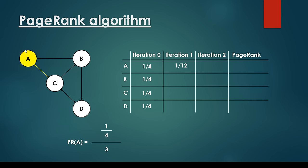What about the first iteration? Let's consider node A. What are the nodes pointing to node A? Basically we just have a single node — node C. So website C is pointing to website A. We calculate the page rank of C in the previous iteration, which is 1/4, and divide it by the number of outgoing links for node C, which is 3. So the page rank of A in the next iteration is going to be 1/12.